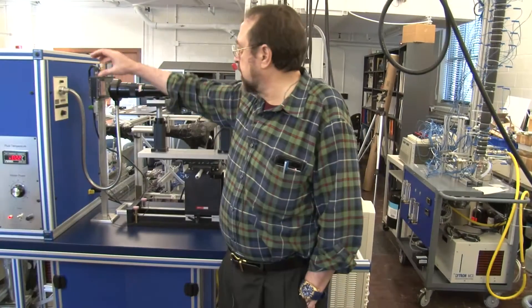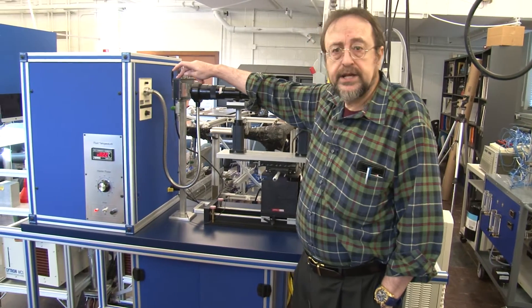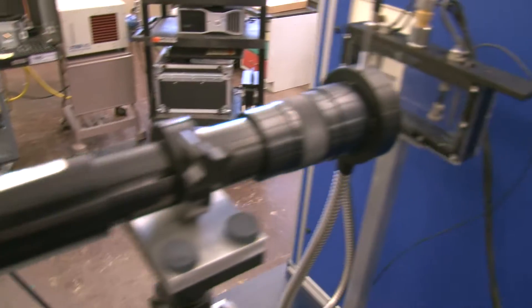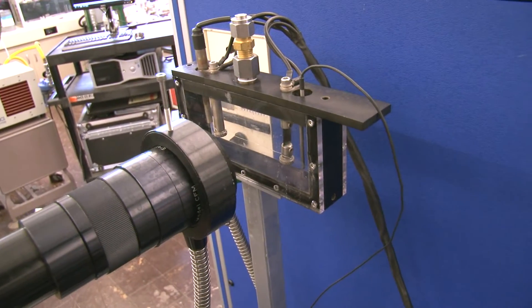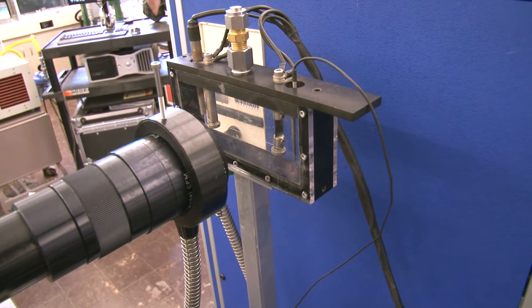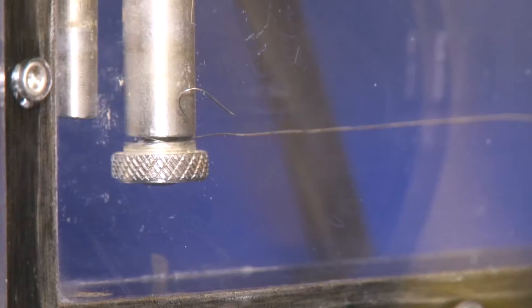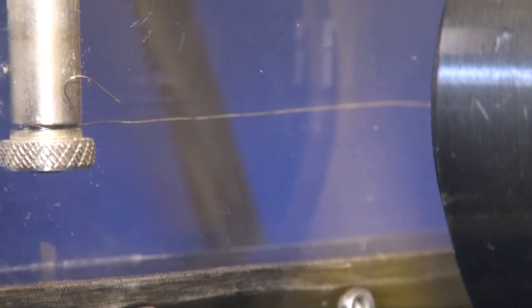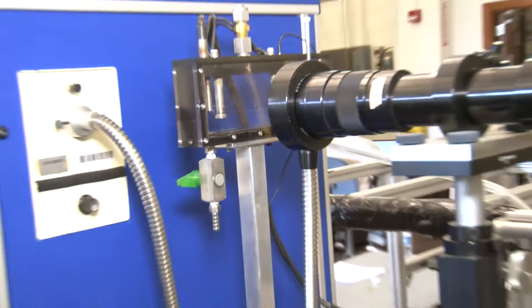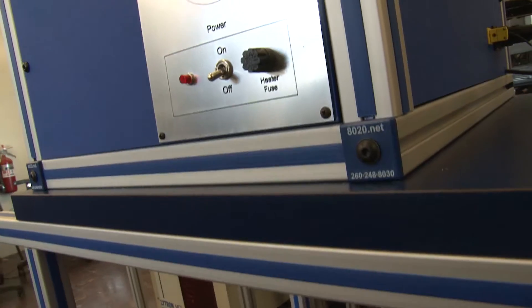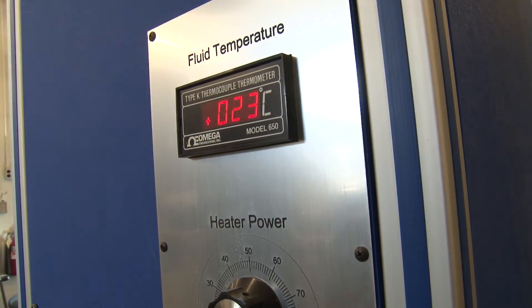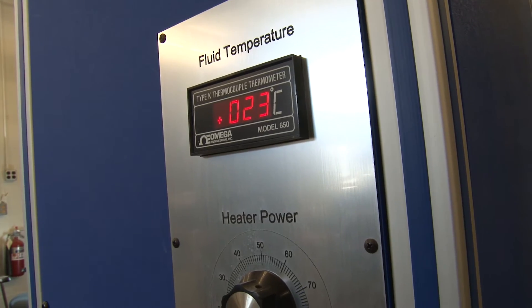So we have at the heart of the experiment right here is a test module. It's transparent and within which we put the fluid that boils at relatively low temperature and we have a wire that is stretched within the fluid itself and we pass electrical current in order to induce boiling along the wire surface.